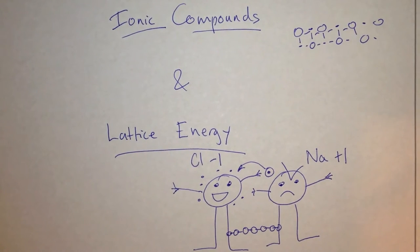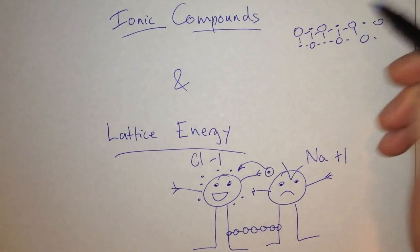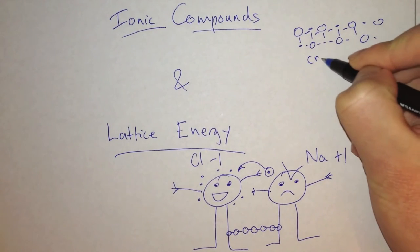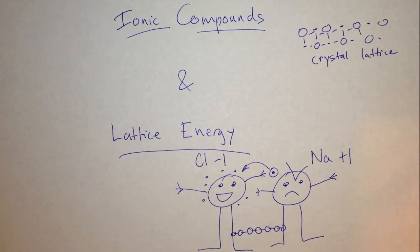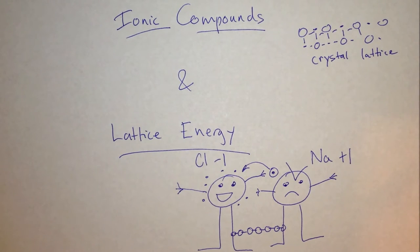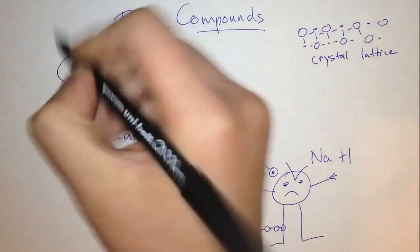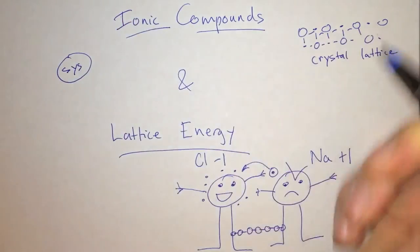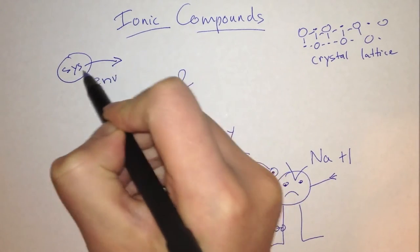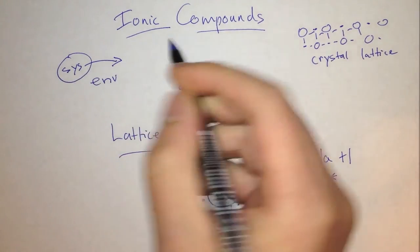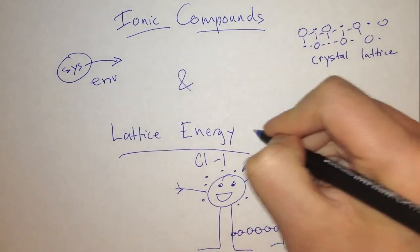This structure is called the crystal lattice. The lattice energy is the energy that is released when the crystal lattice is formed. All compounds are created so that they lower their energy, and that energy is released into the environment. So based on our convention of defining energy from the point of view of the system and not the environment, the energy released from the system is leaving the system, so our lattice energy is always negative.